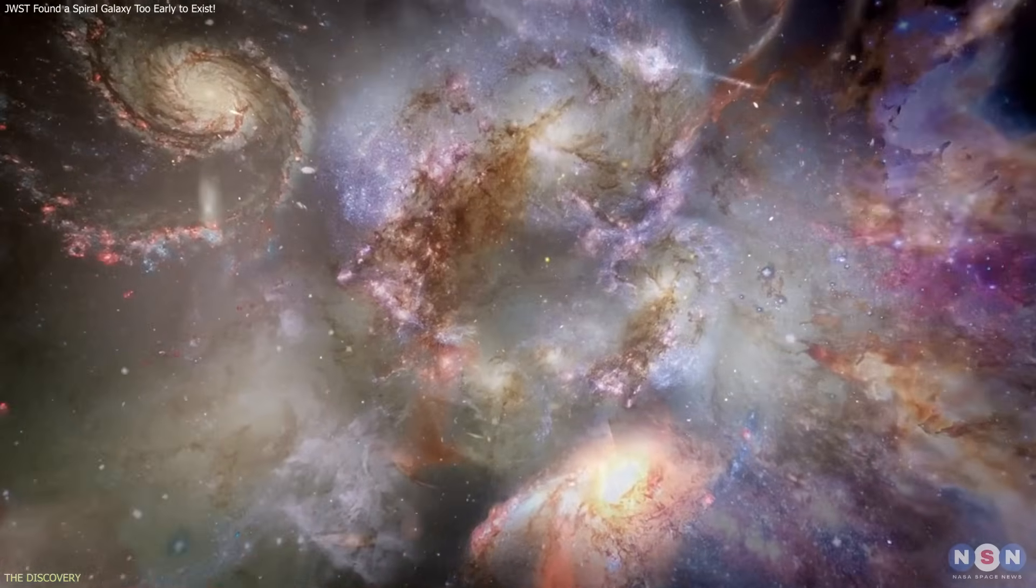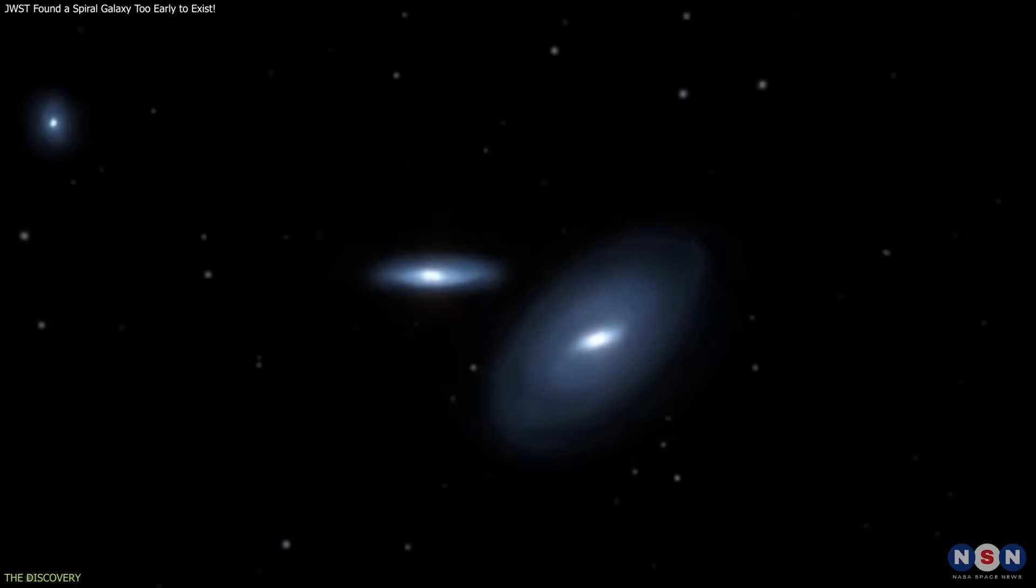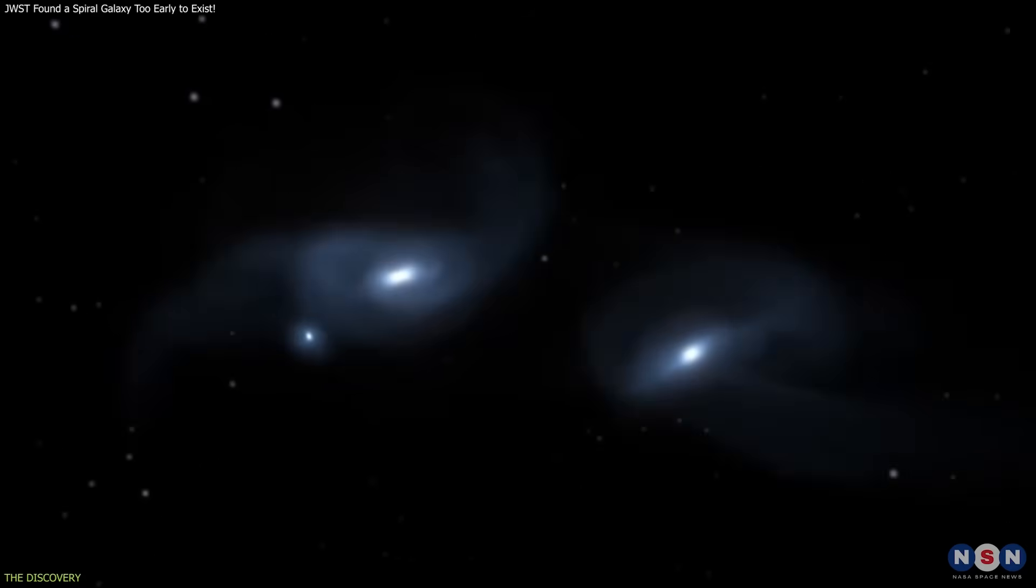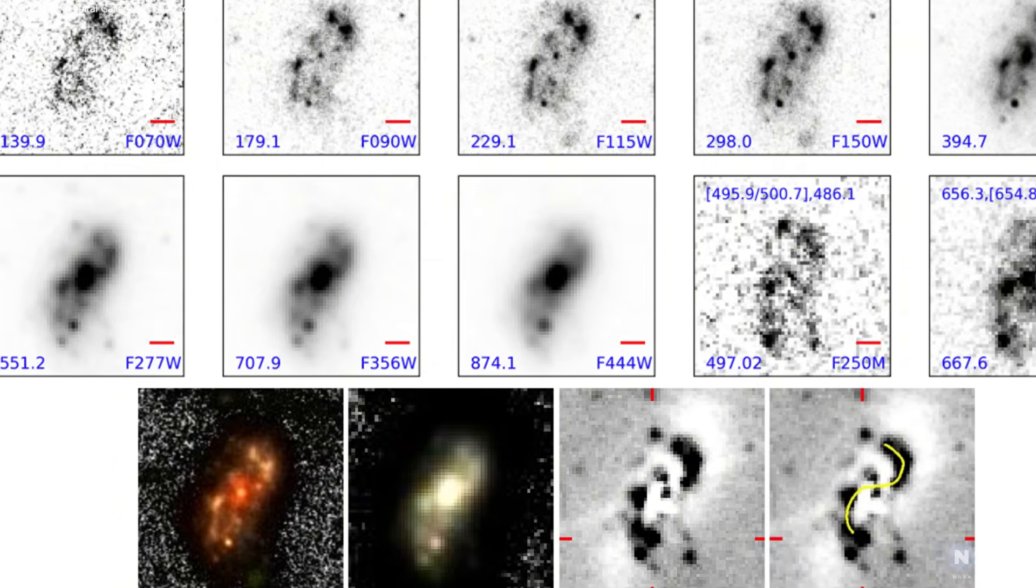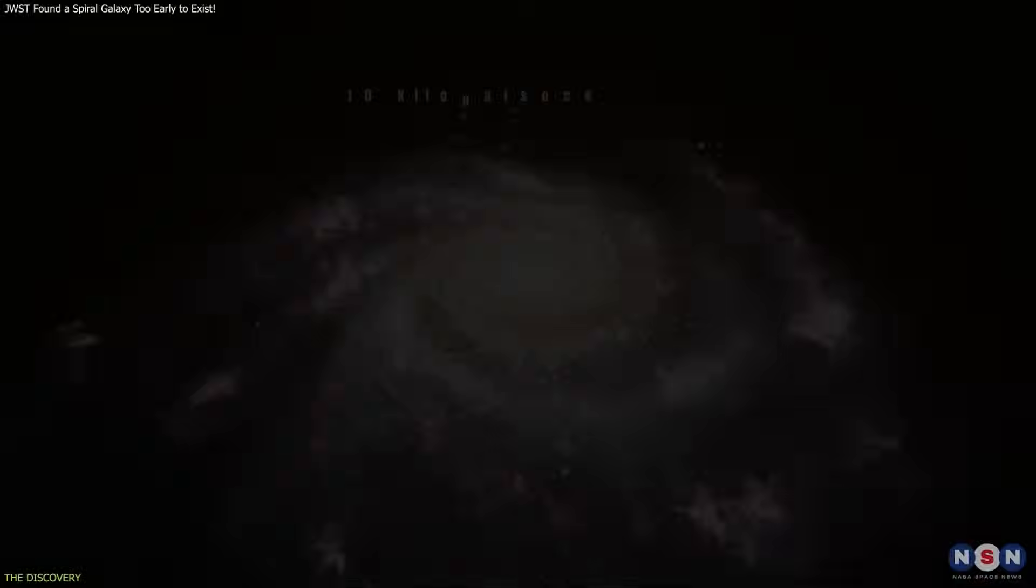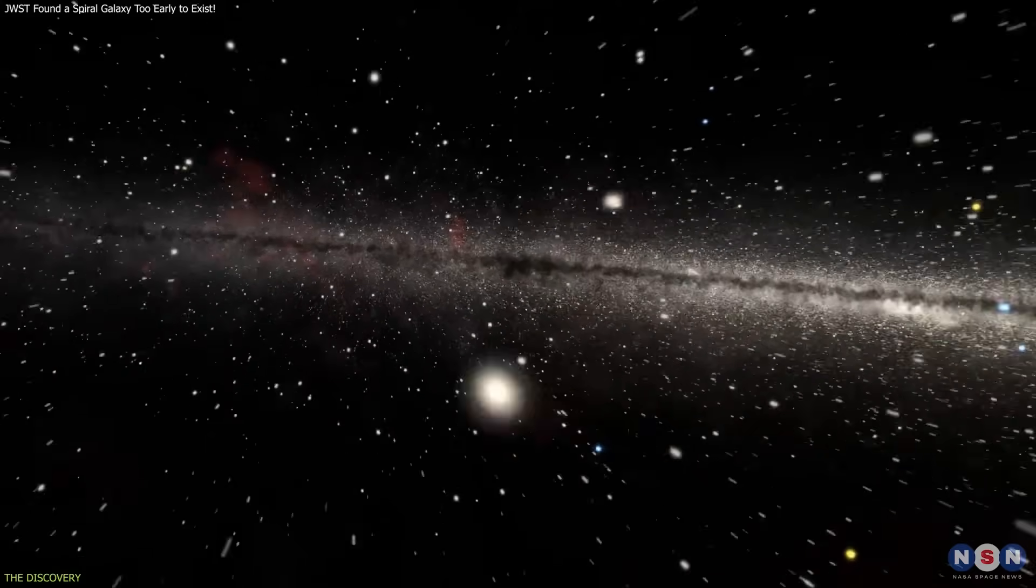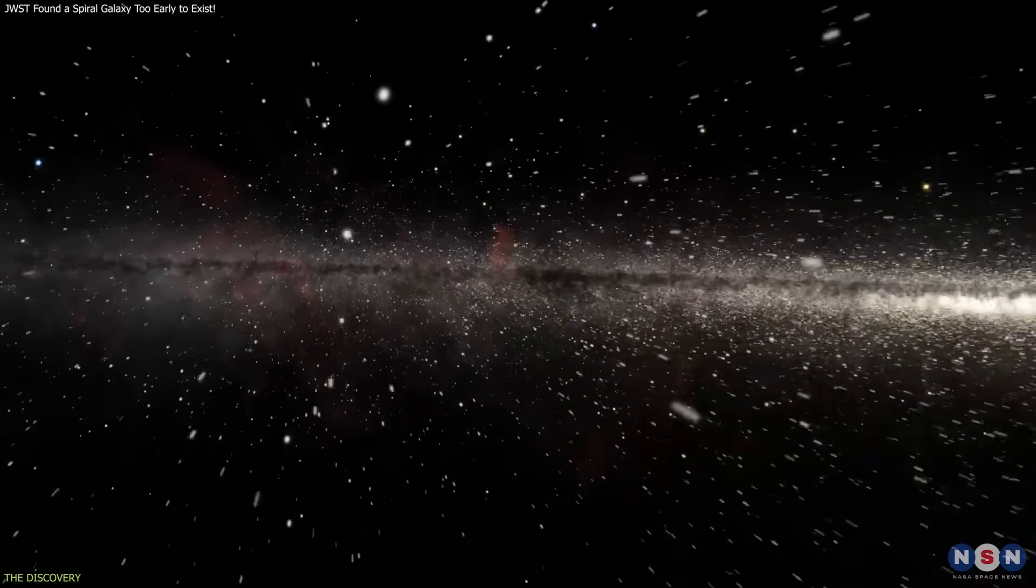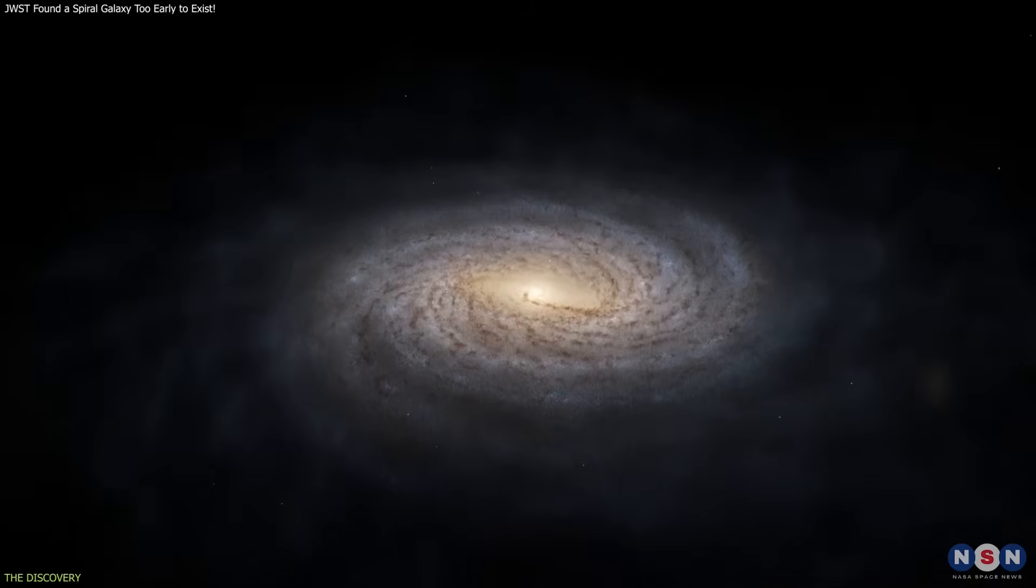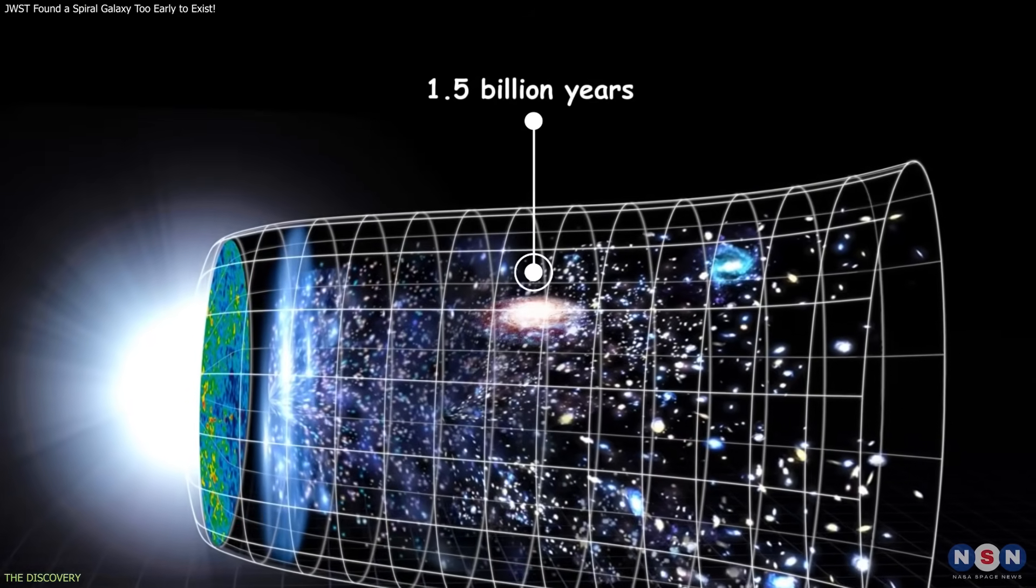During this period, galaxies were expected to be turbulent and irregular, shaped by frequent collisions and unstable conditions. Instead, Alec Nanda displays the characteristics of a mature disk galaxy. It spans about 10 kiloparsecs, around 32,000 light years, and contains roughly 16 billion solar masses of stars. While smaller and less massive than the Milky Way, it is still substantial for its time.